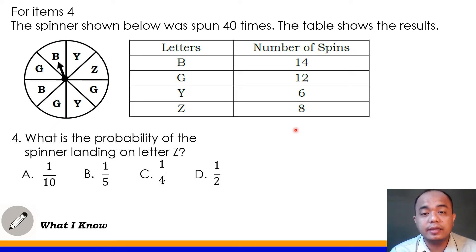Syempre, magbibase tayo sa ibinigay na data dito as the result when the spinner spanned 40 times. So letter Z yung tinatanong. So lumabas ang ating letter Z. The number of favorable outcomes here is 8. And how many times it was spanned? Yes, the spinner is spanned 40 times. So that would be the possible outcomes. 40 times. So 8 out of 40, base sa risulta dito, base sa ibinigay na data, 8 out of 40 ang probability ng pagland ng letter Z sa ating spinner.